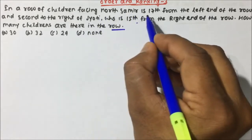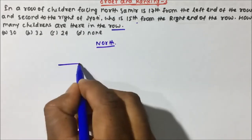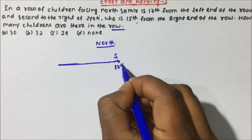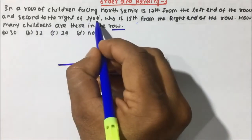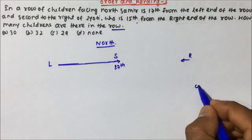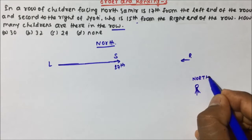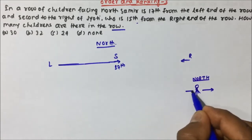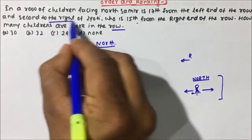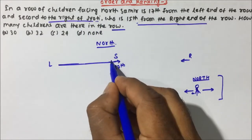In a row of children facing north, Samir is 17th from the left. If it is north, then my left will be from this side. So assume this is Samir and this is 17th from the left end. And Samir is second to the right of Jyoti. If a person is facing north, then right will be this side and left will be this side. So Samir is second to the right of Jyoti, who is 15th from the right end.